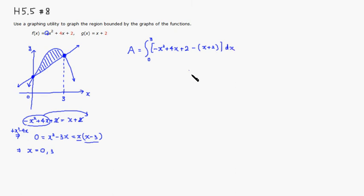Simplify a bit. You have 2 minus 2 cancel out. And if we group 4x and minus x together, we will get integral from 0 to 3, then you have negative x squared, and combining 4x and negative x, so it's going to be a positive 3x dx.